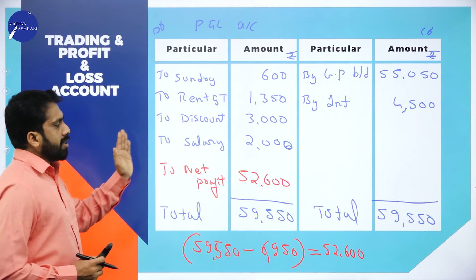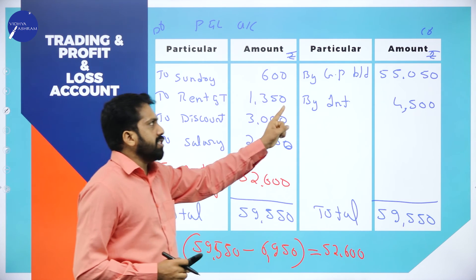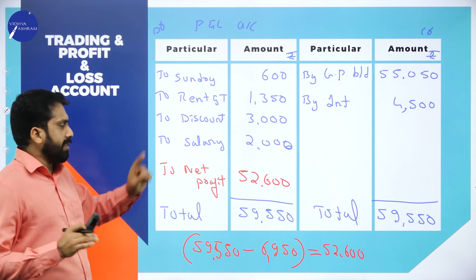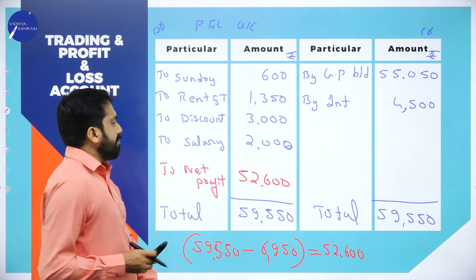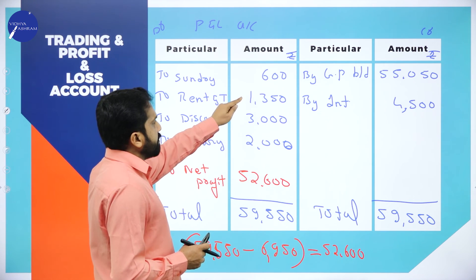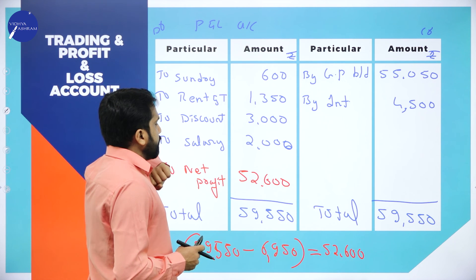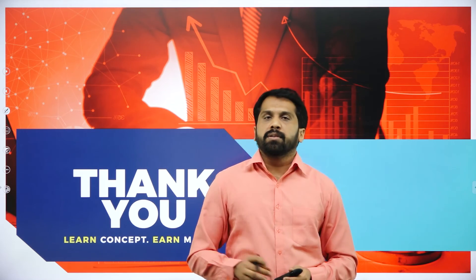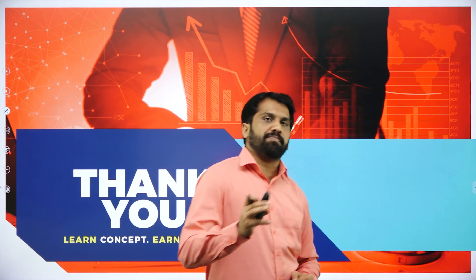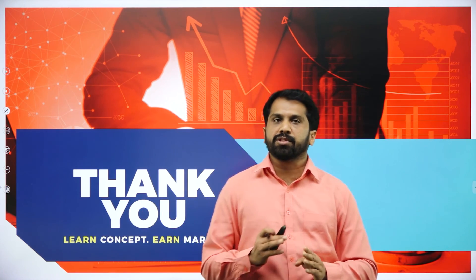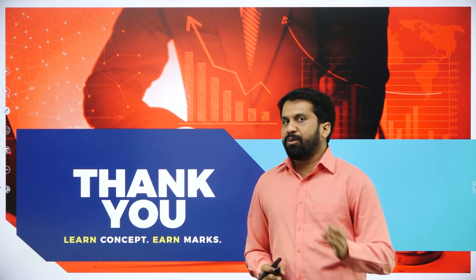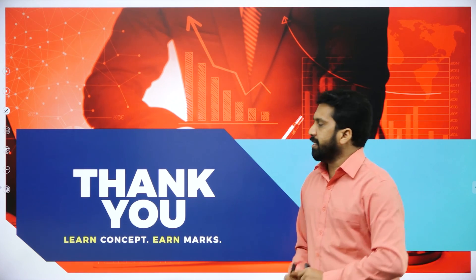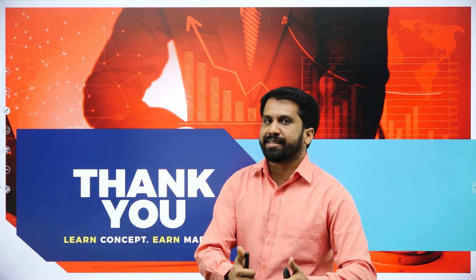Hope you understood how to do the trading account as well as the profit and loss account. One thing to remember: whatever the trading account final answer is — if it is a gross profit it will come on the credit side; if it is a gross loss it will come on the debit side. The total comes to 59,550 on both sides — it balances properly. We are done with your trading account as well as P&L account in a single problem. We understand gross profit as well as net profit. We end this session with the saying: learn concept and earn marks.